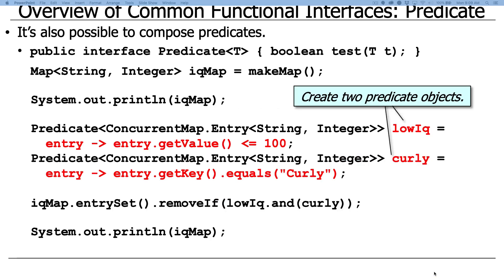Okay. It's also possible to compose predicates together. This is kind of cool. So you can actually create two predicate objects and then compose them. So let's see how we might do that. So here we're going to go ahead. This is another variant of this example. We make our IQ map like we did before, and now we're going to make ourselves a predicate we call low IQ,